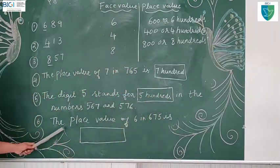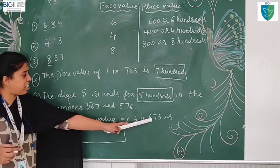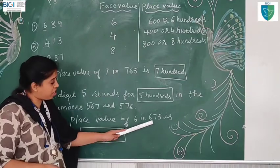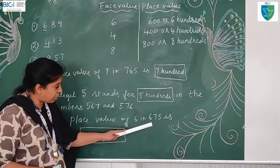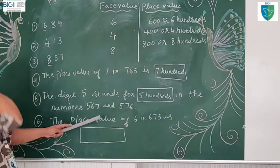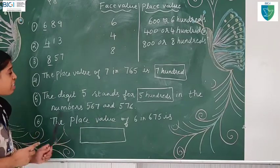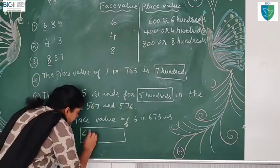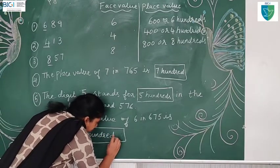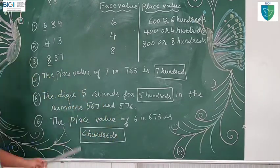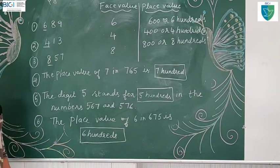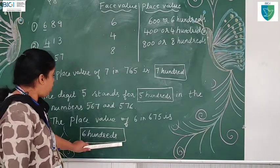Understood? The place value of 6 in 675 — what is the place value here? In which digit does it come? 675 — 600. The place value of 6 in 675 is 600. The rest of the problems you should do by your own in the next few children; that is your homework.